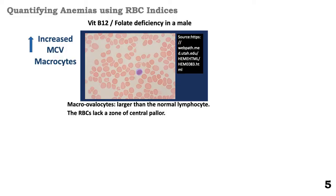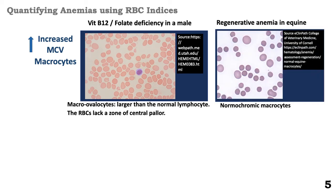In this slide, we are showing how macrocytes look. The first picture was obtained from a male patient with vitamin B12 deficiency or folate deficiency. The macrocytes shown are larger in diameter than a normal lymphocyte, which is also shown in that smear, and these large macrocytes lack a zone of pallor in the center. The next slide shows regenerative anemia in an equine — some cells are large, some are small, and it's been defined as a normochromic macrocytic anemia.